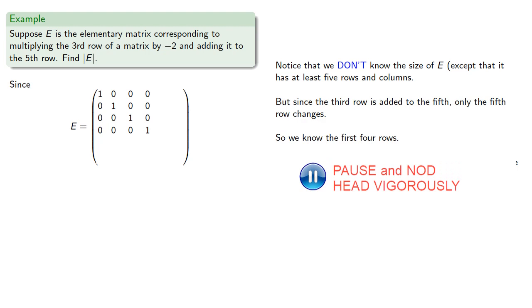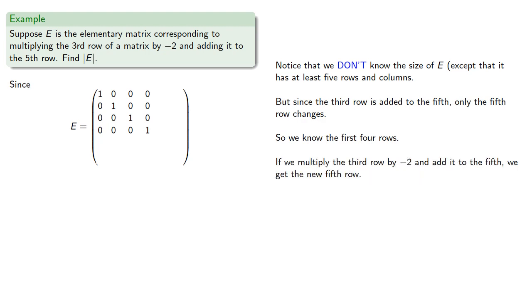And if we multiply the third row by negative two and add it to the fifth, we get the new fifth row. And if there are more rows, all other rows of the identity matrix are unchanged.